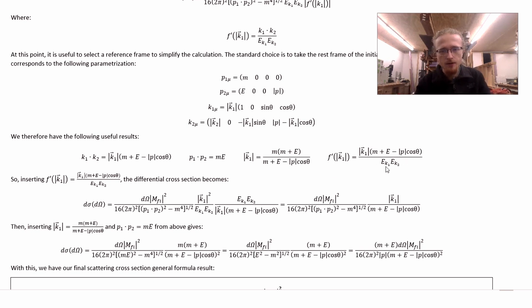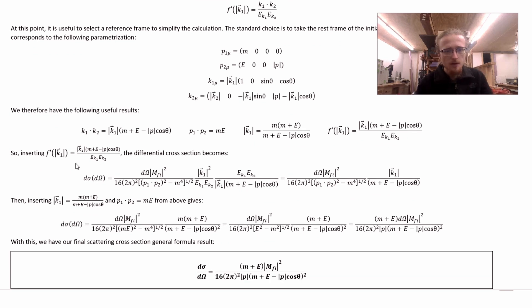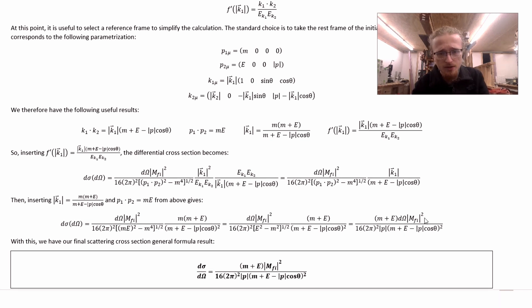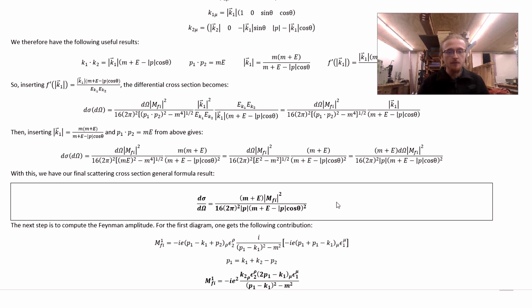With this parameterization, we have these results for the desired dot products and this momentum magnitude, and that yields this value for the F prime function that we want. If we insert that value into the differential scattering cross-section as we last left it, we end up with this. We can then insert this result for the momentum magnitude that we need and that other dot product that we need, and simplify, and we get this result, which is actually the final answer. So now we have the differential scattering cross-section with respect to the desired solid angle, and on top of that, it is simplified down as much as we can before we know the Feynman amplitude. So now we need to work out the Feynman amplitude.